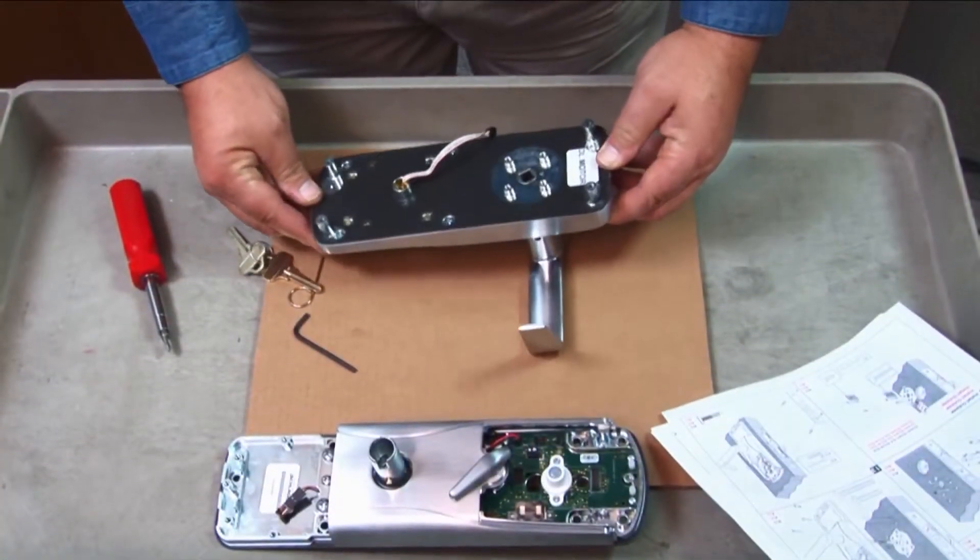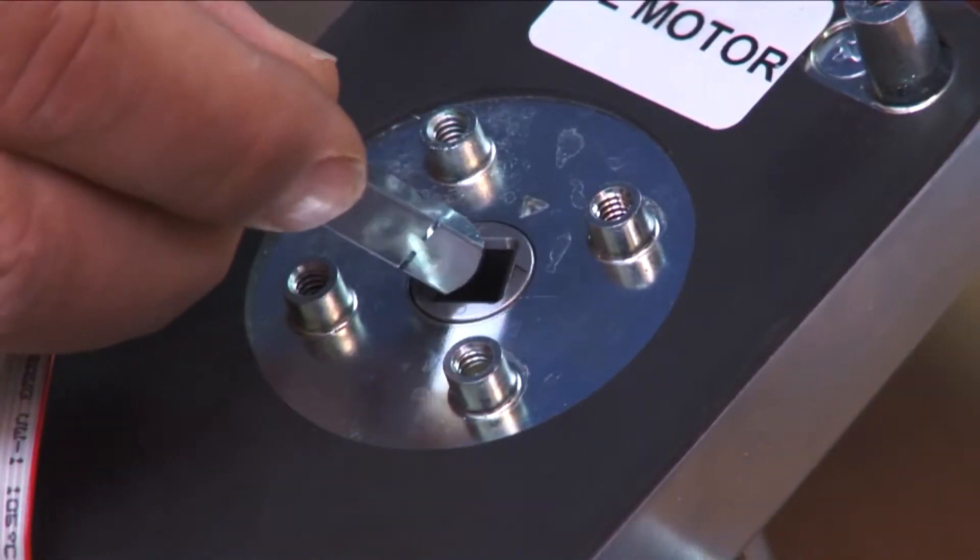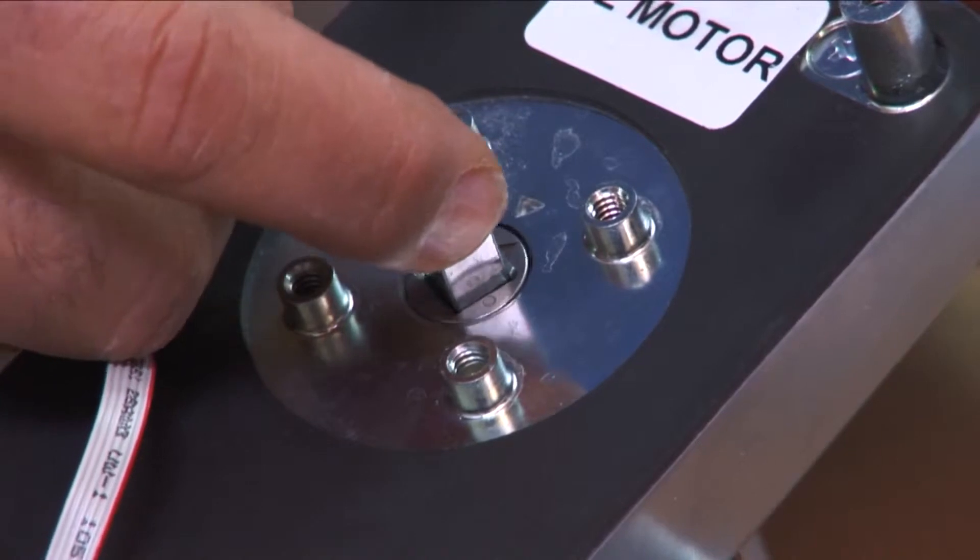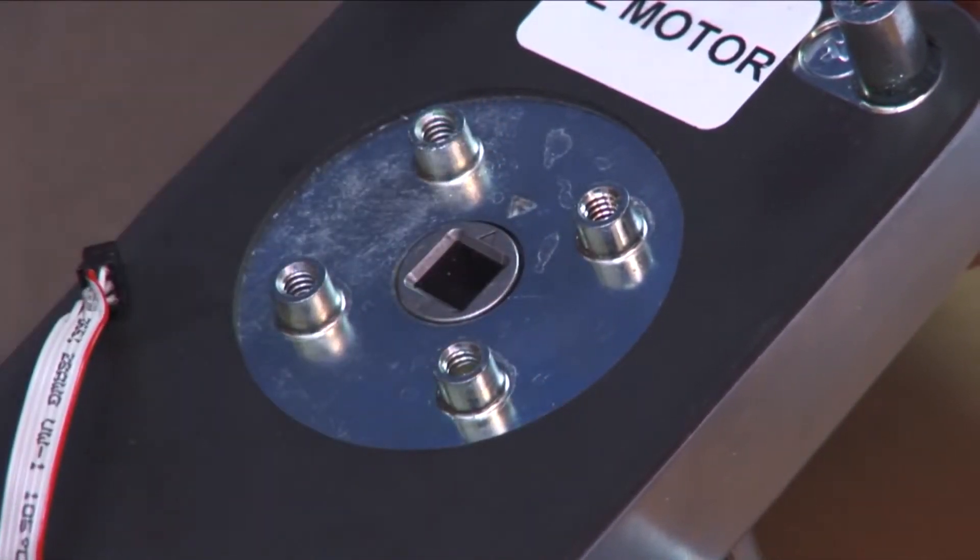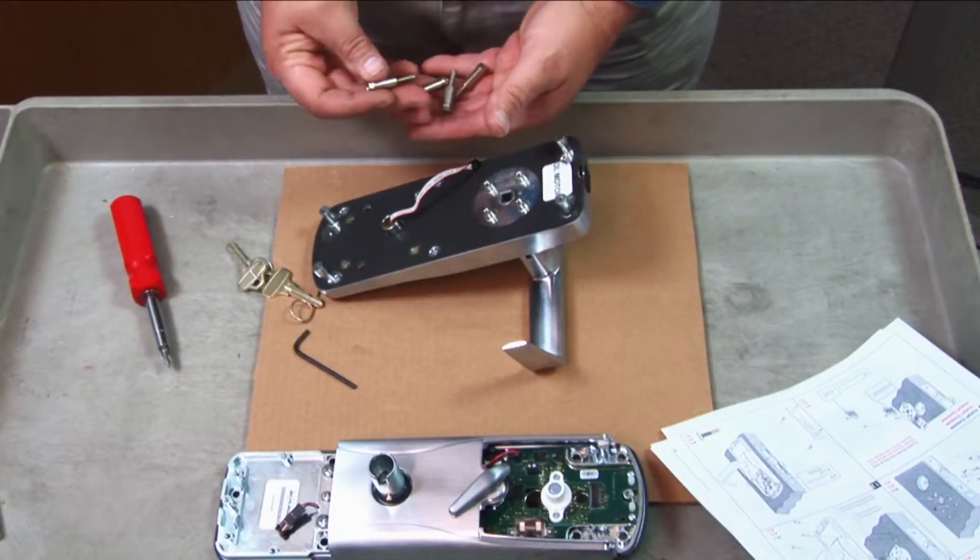Make sure the two orientation triangles on the back of the outside assembly are lined up. You can use one of the spindles to rotate to the correct position. Install the four standoff posts and two center prongs.